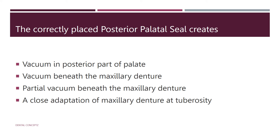Next: the correctly placed posterior palatal seal creates what? The rationale for the posterior palatal seal is to create a partial vacuum beneath the maxillary denture, which is activated only when horizontal or lateral tipping forces are directed against the denture. The answer is partial vacuum beneath the maxillary denture.